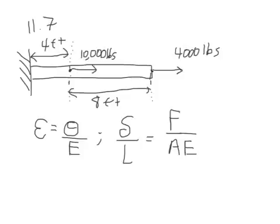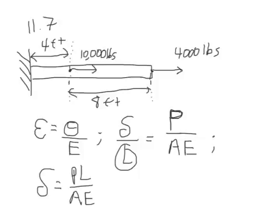And let's give the variable P to our force to get in the habit of correlating P with force. Now let's solve for delta by bringing L from the bottom left to the top right. And now we have an equation we can use to solve this problem. But here's where it gets tricky. We have to apply this equation to two different sections of our bar.